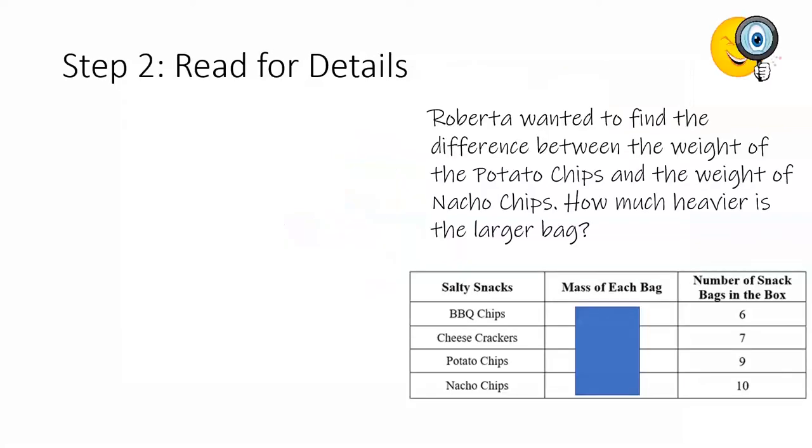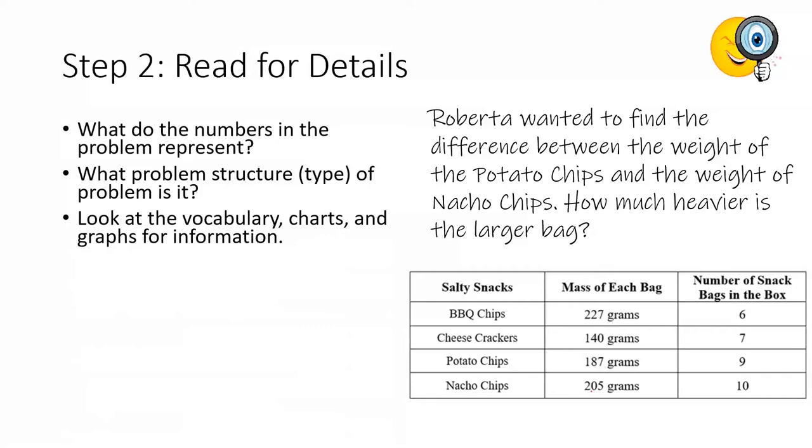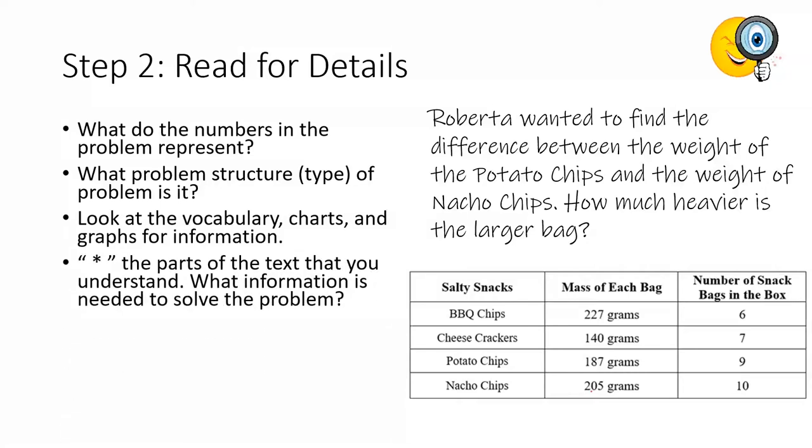We are now going to read the problem a second time. This time, we're going to read carefully for details that'll help us solve the problem. First off, let's think about what do the numbers in the problem represent? Oh, there are some new numbers that just appeared. What kind of problem is it? What do I need? How might I structure it to solve it? Let's look for some important vocabulary, words, charts, or graphs for more information. We're going to star the parts of the text we understand, and what is the information needed to solve the problem? We're going to put a question mark next to text that we might need to know more about or we may not understand.